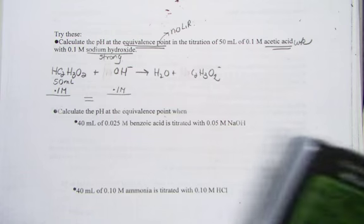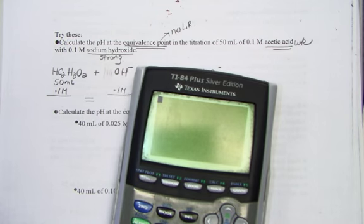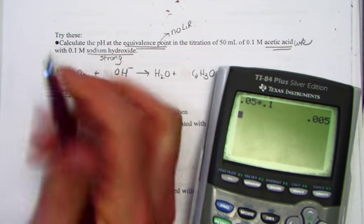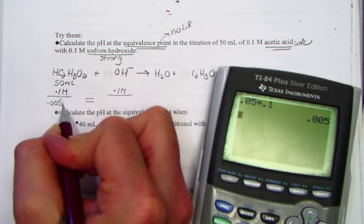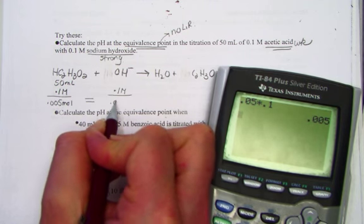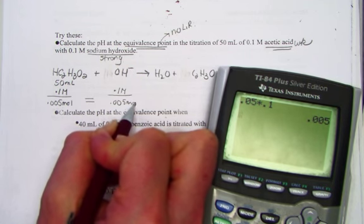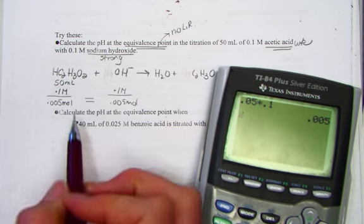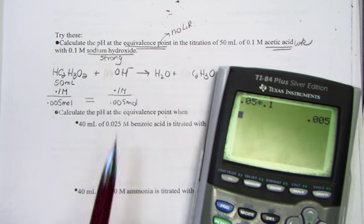So when I think about the number of moles, I would simply hit 0.05 times 0.1 is 0.005. And I also know that that must be the same value of moles of the base.